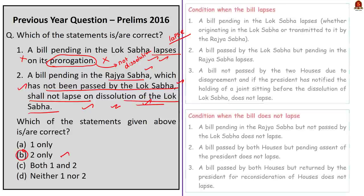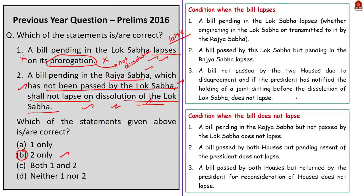I have given here all the other six conditions regarding the lapsing of bills in parliament. Just pause the video and go through it. It can be a bit tricky, but if you read once or twice you can easily understand the provisions. This is regarding the first question.